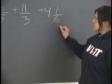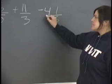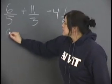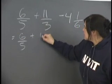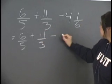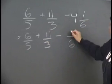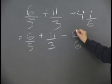So the first step we do is we change this mixed fraction into an entire fraction. So we'll go 6 fifths plus 11 thirds minus, and what we'll do here is we'll need to multiply the denominator by the whole number and add the numerator.